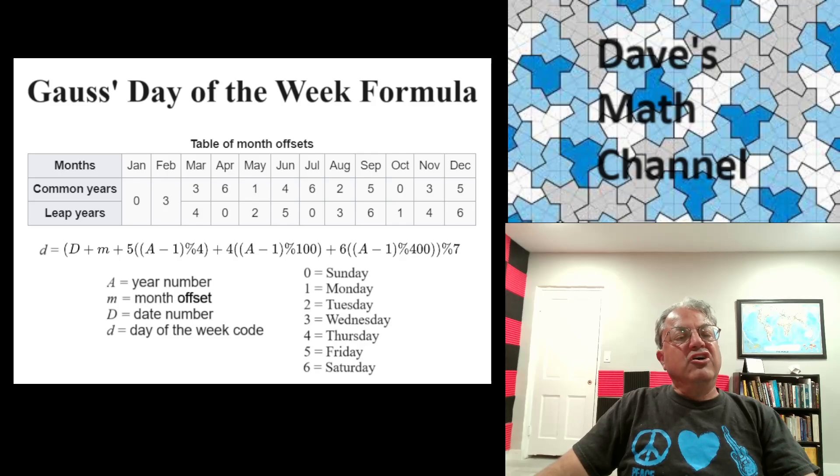And the other symbols here, A stands for the year number, just the full year, four digit year. Little m is the month offset. This is probably the most complicated thing in this formula because it's not enough to just know the month number. You also have to calculate this offset that's a result of what month it is of the year. This has to do with the fact that our months aren't exactly four weeks and the offsets kind of a cumulative number of extra days at the end of each month.